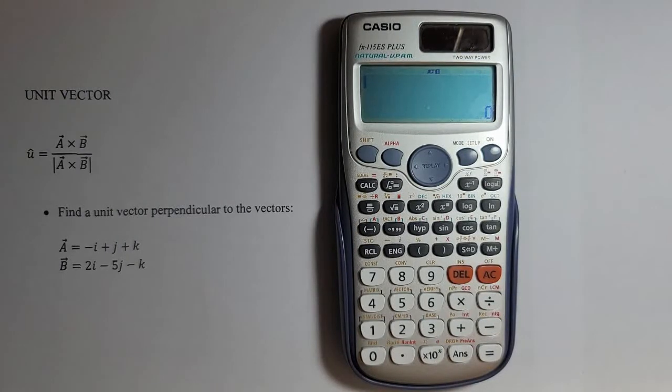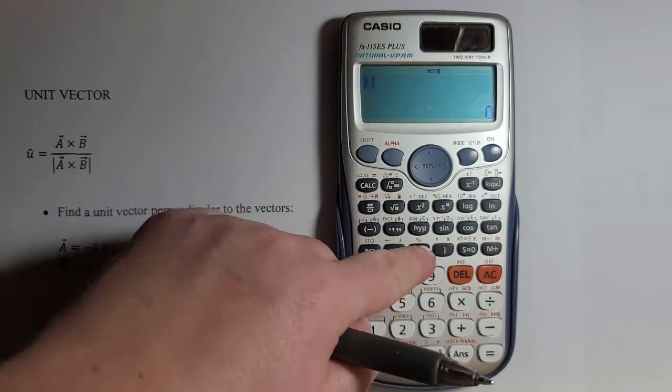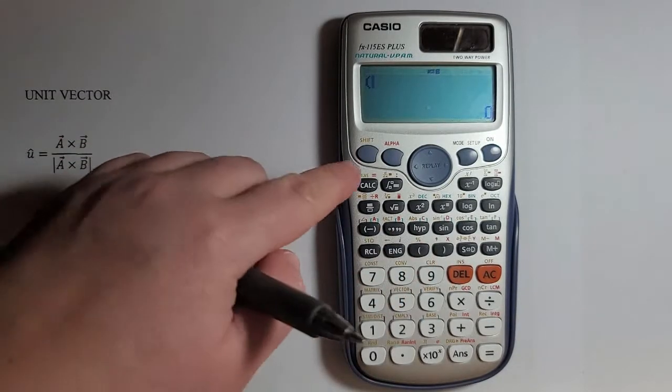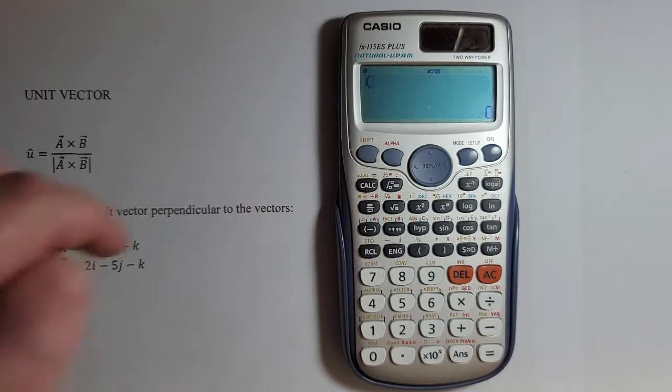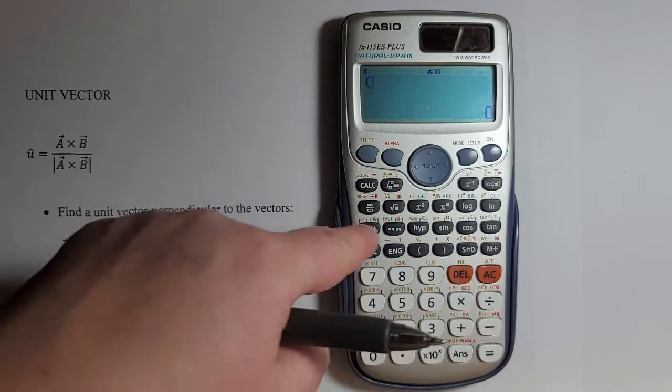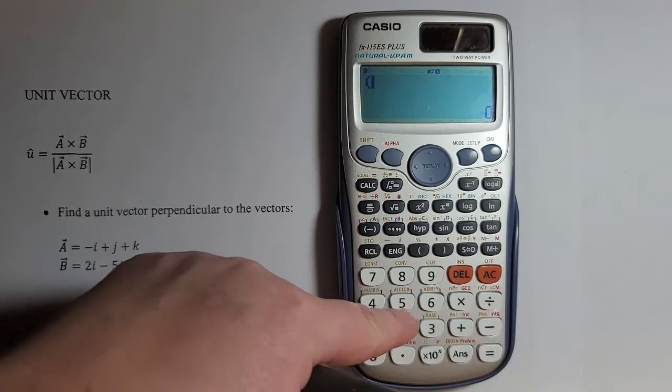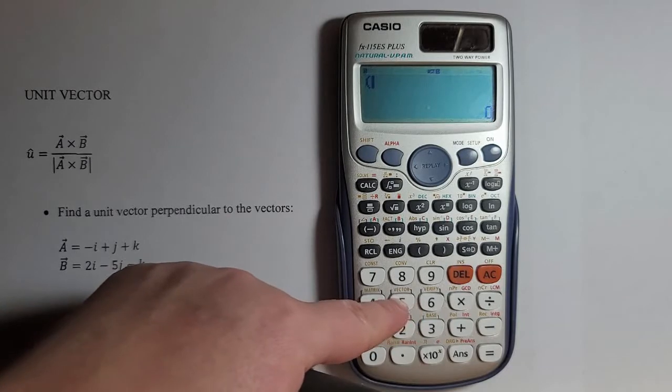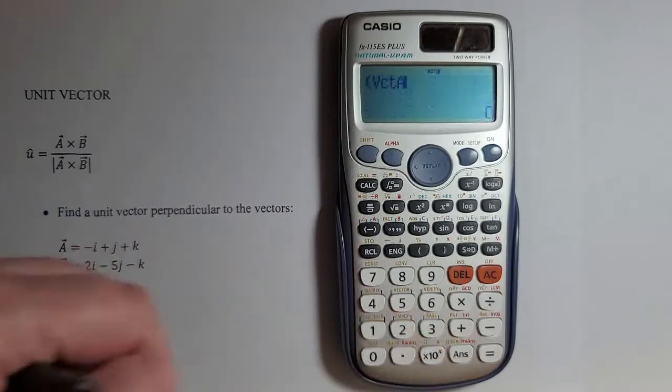Now I will insert the equation in one single step. I'll open the parentheses first and press this shift key. This yellow key is used to access each of the yellow options above each key. With shift pressed, I'll press 5 for vector, then 3 for vector a.